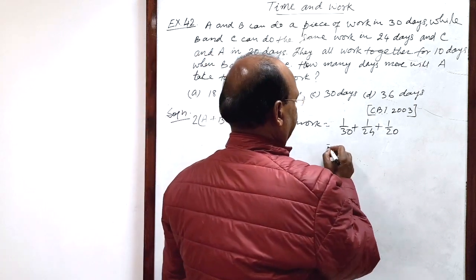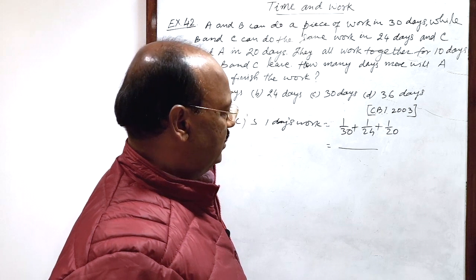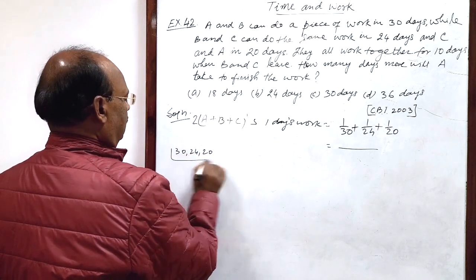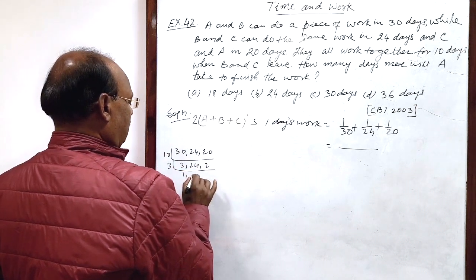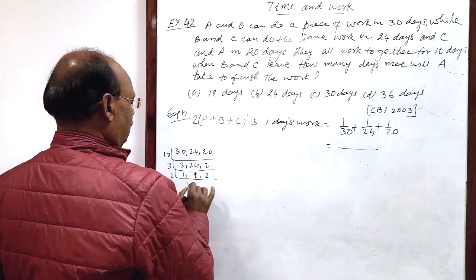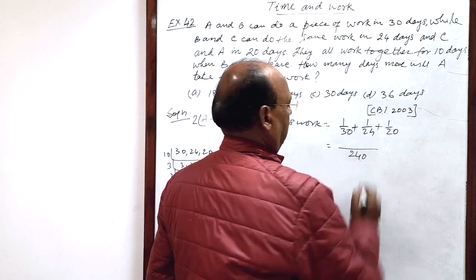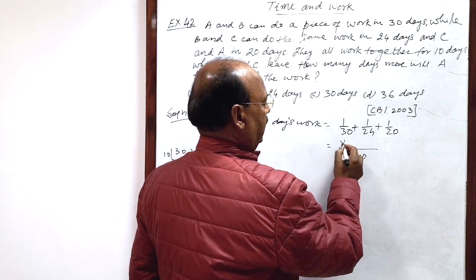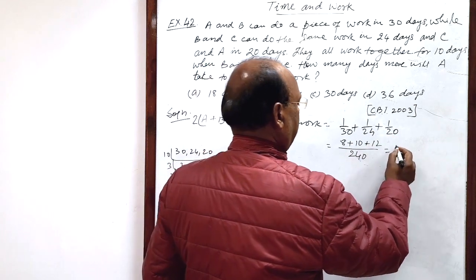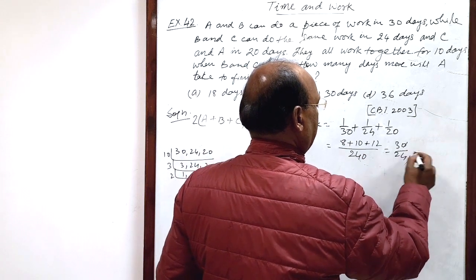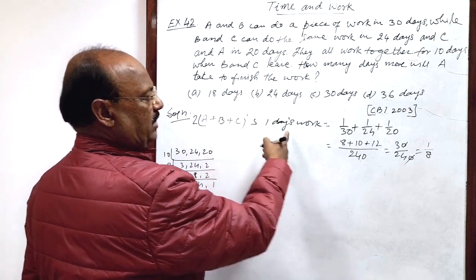Let us simplify it. Let us find out the LCM 20, 30 and 24. So, 10 times 3, 24, 2. Then, 3 times 1, 8, 2. Then, 2 times 1, 4, 1. So, 240 is LCM. Here, 30 into 8 is 240, so 8, 24 into 10, so 10, 20 into 12, so this is 12. And this is equal to 30 by 240, 0 will be cancelled out. This is 1 by 8. So, 2 times of A plus B plus C's 1 day work is 1 by 8.